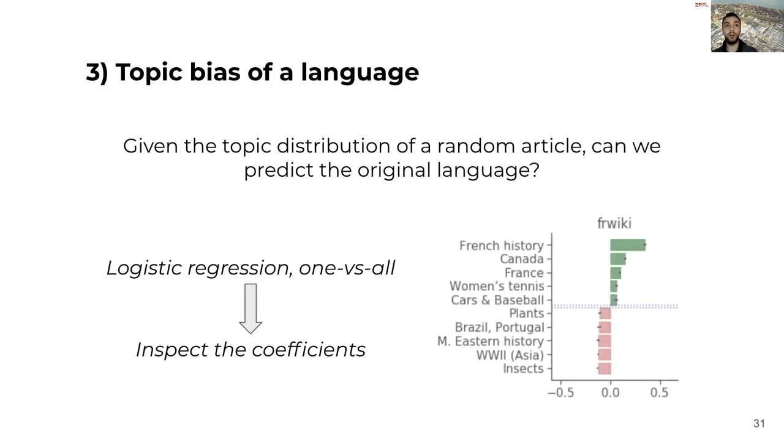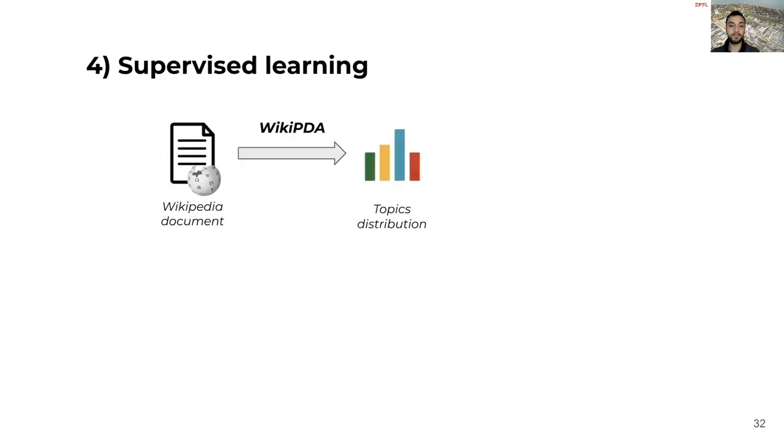For example, in the case of French, we can see a positive bias for content related to France and Canada, and on the other end, we can see a lack of content about World War II in Malaysia and the history of Middle East.